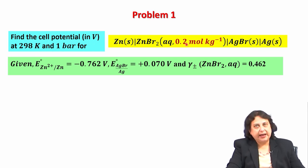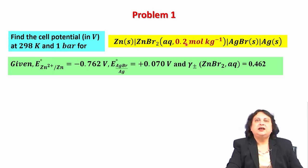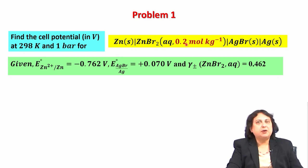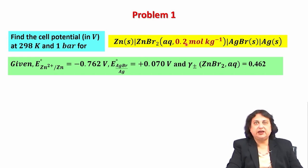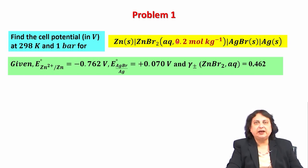In the scale of molality, the zinc bromide solution that we are using has a concentration of 0.2 moles of zinc bromide per kg of water. This is the first numerical problem in my series of lectures where I am explicitly mentioning the concentration of the electrolyte in the electrochemical cell of interest.